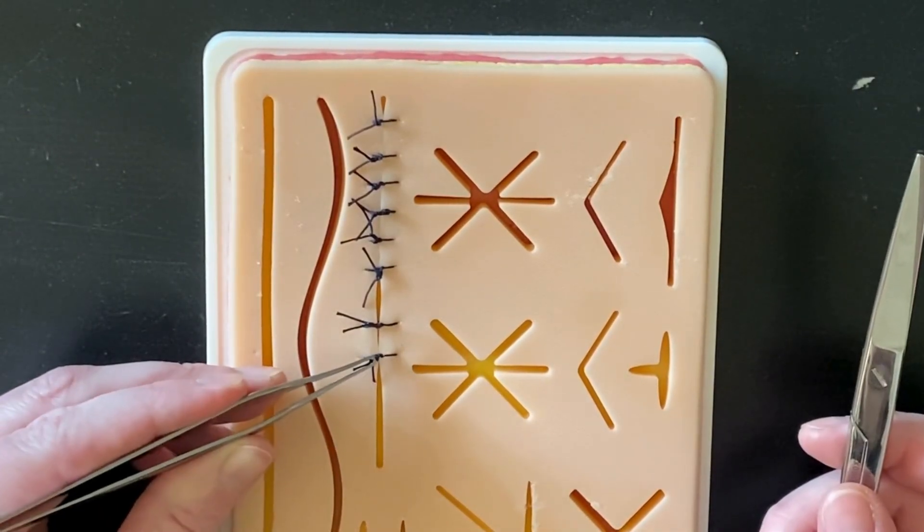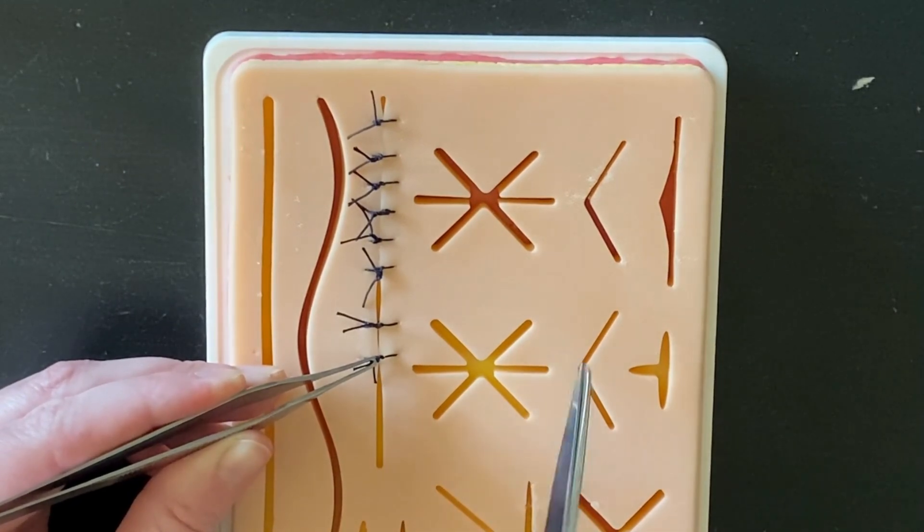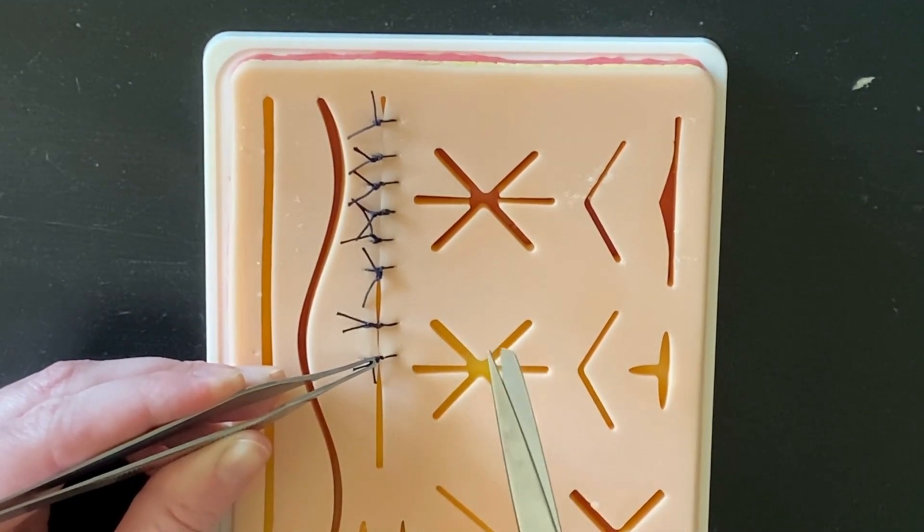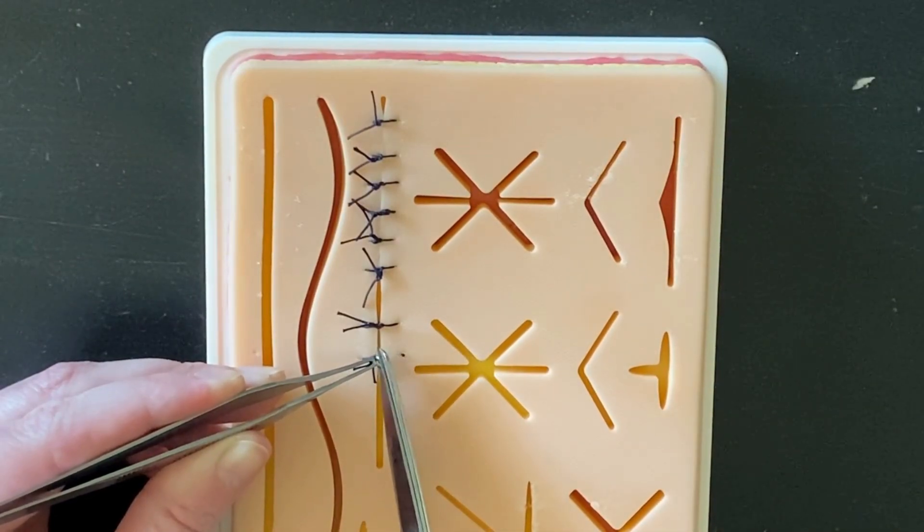Usually what I'll do is pull up on the knot of the suture, which gives you a little space between the skin edge and the knot. I'll insert the small end of the suture scissors just underneath there and cut pretty close to the knot.